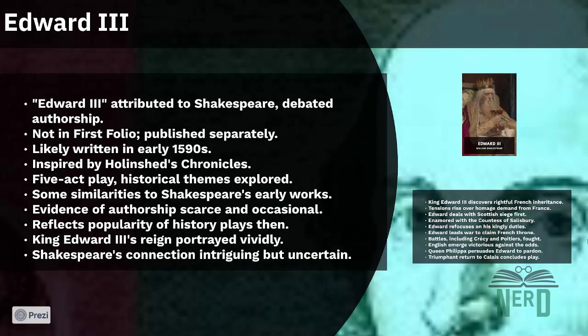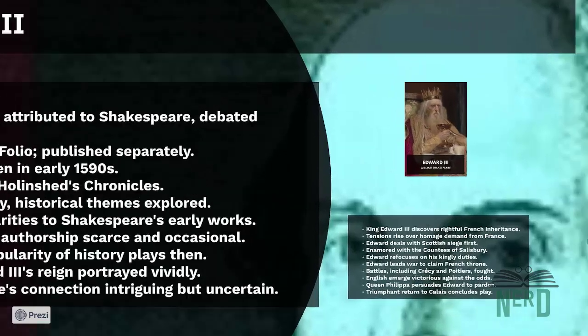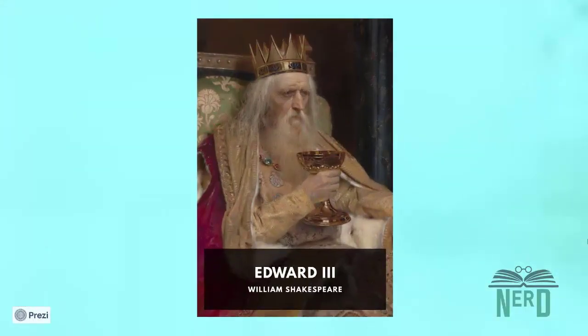One reason why Edward III was not included in the list of Shakespeare's history plays is that the play was not included in the First Folio of 1623. It was published in quarto form in 1596, indicating that it was likely written in the early 1590s when history plays of this nature were quite popular. The play draws its inspiration primarily from Raphael Holinshed's Chronicles.